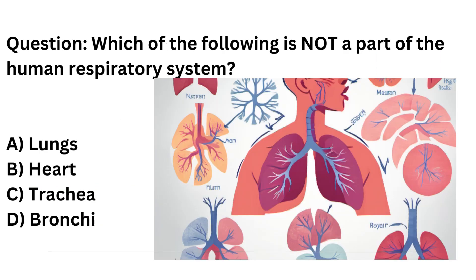Question. Which of the following is not a part of the human respiratory system? A. Lungs. B. Heart. C. Trachea. D. Bronchi.